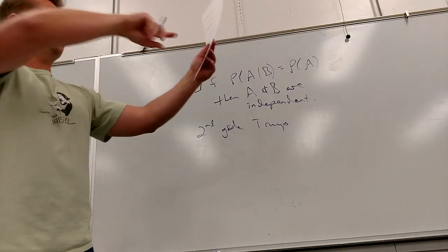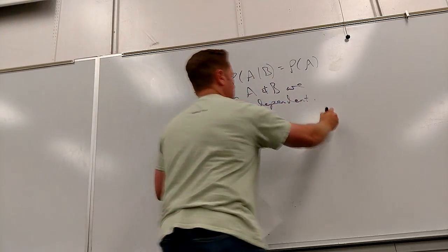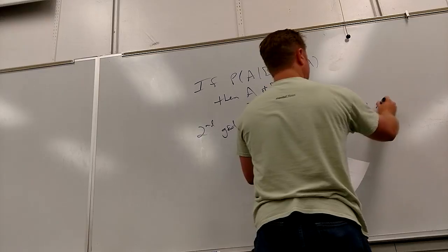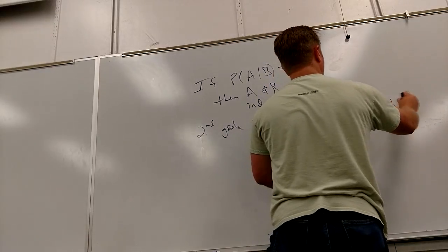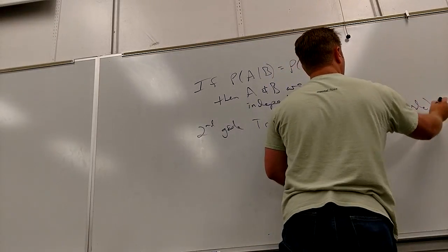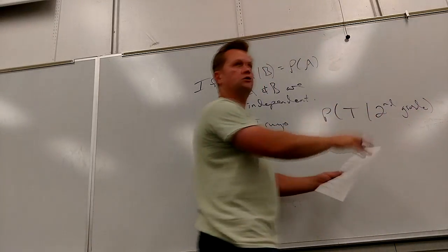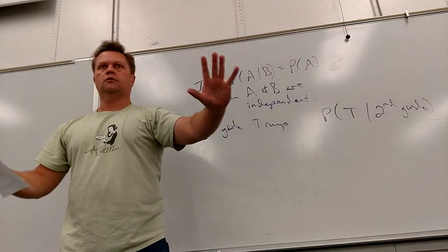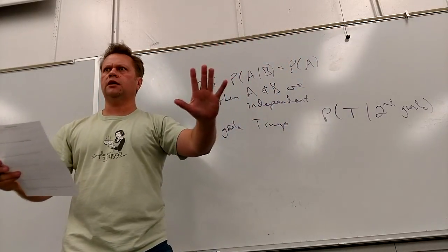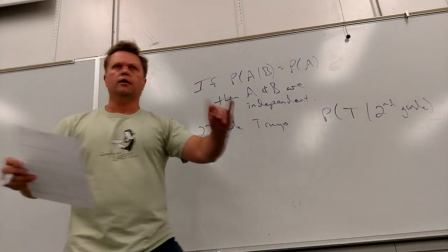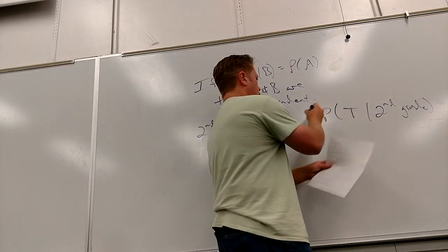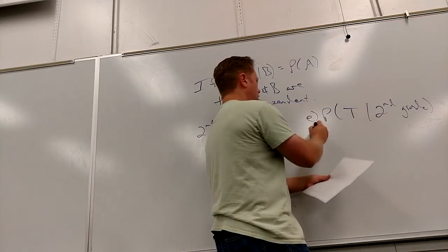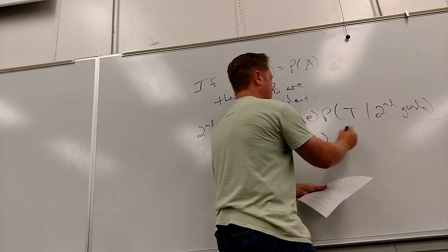Have I already calculated any givens involving these two things? Yes — part E. I know the probability of Trump given second grade. So I want to compare that to the probability of Trump by itself. In part E you calculate P(Trump | second grade), and in part B you calculate P(Trump).